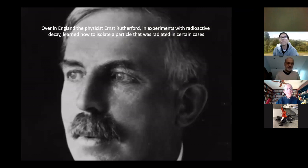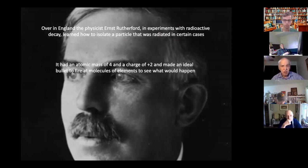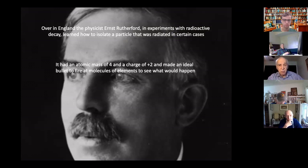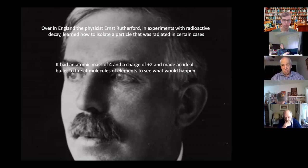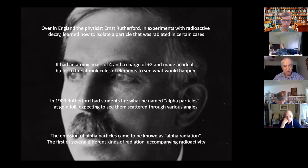Over in England, Rutherford was doing experiments with radioactivity. He learned that a particle radiated in certain cases had an atomic mass of four and a charge of plus two — it was a particle. We know it to be a helium nucleus, but they didn't know that at the time. They just knew this particle, given off in some radioactive experiments, made an ideal bullet to fire at molecules because it was heavier — a bigger particle. So he starts firing these things at all kinds of stuff, and in his lab, some of his students fired what he was calling alpha particles at gold foil. The emission of these alpha particles became known as alpha radiation — the first of several different kinds of radiation accompanying radioactivity.